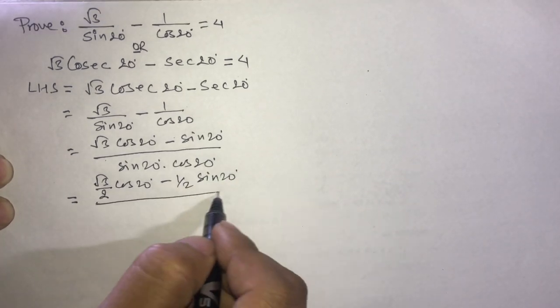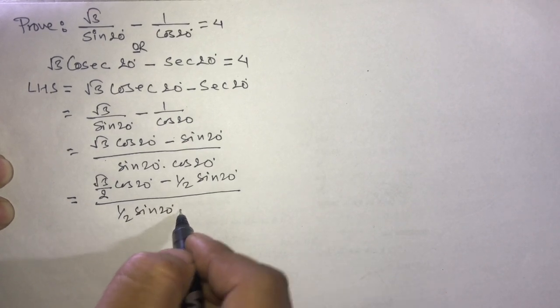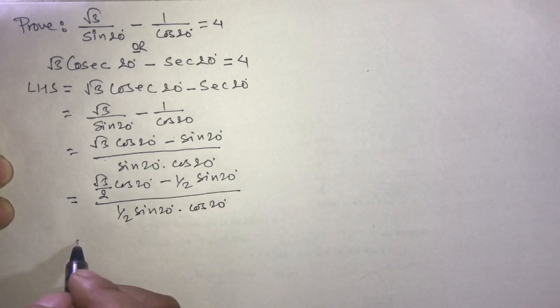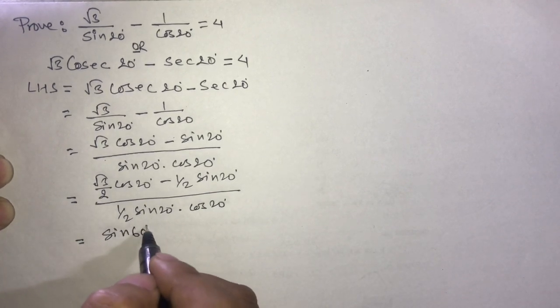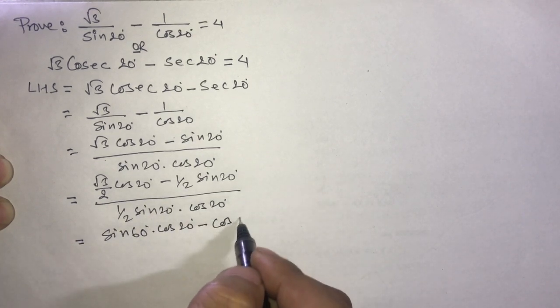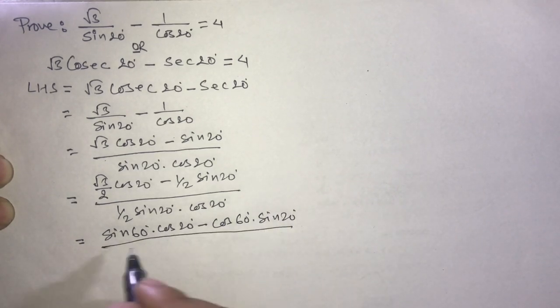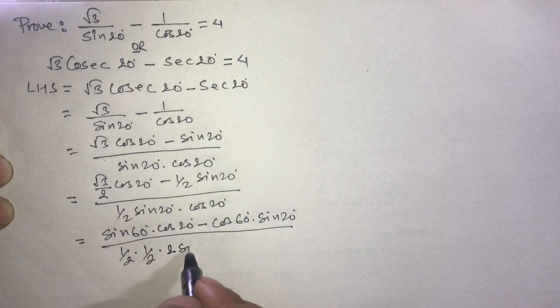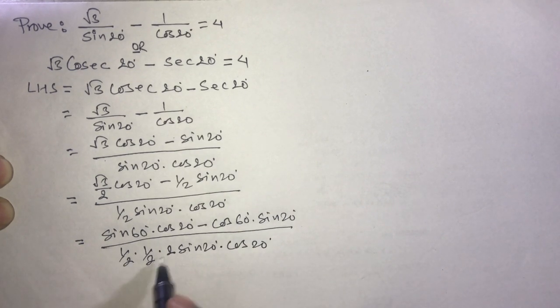In the denominator, we have 1 by 2 into 2 sine 20 degree cos 20 degree. Here the 2 cancels with 1 by 2.